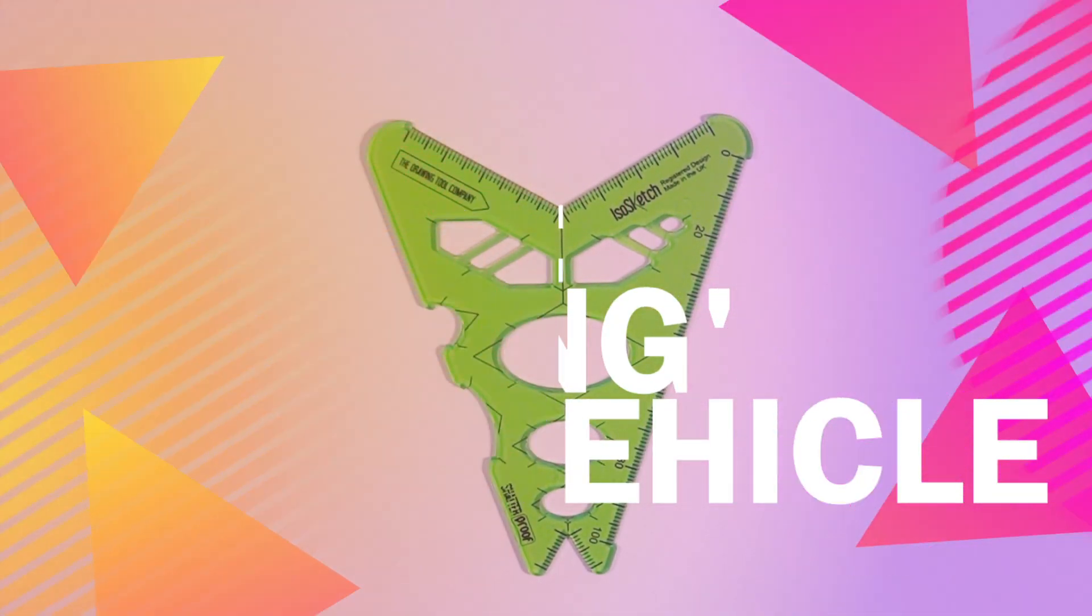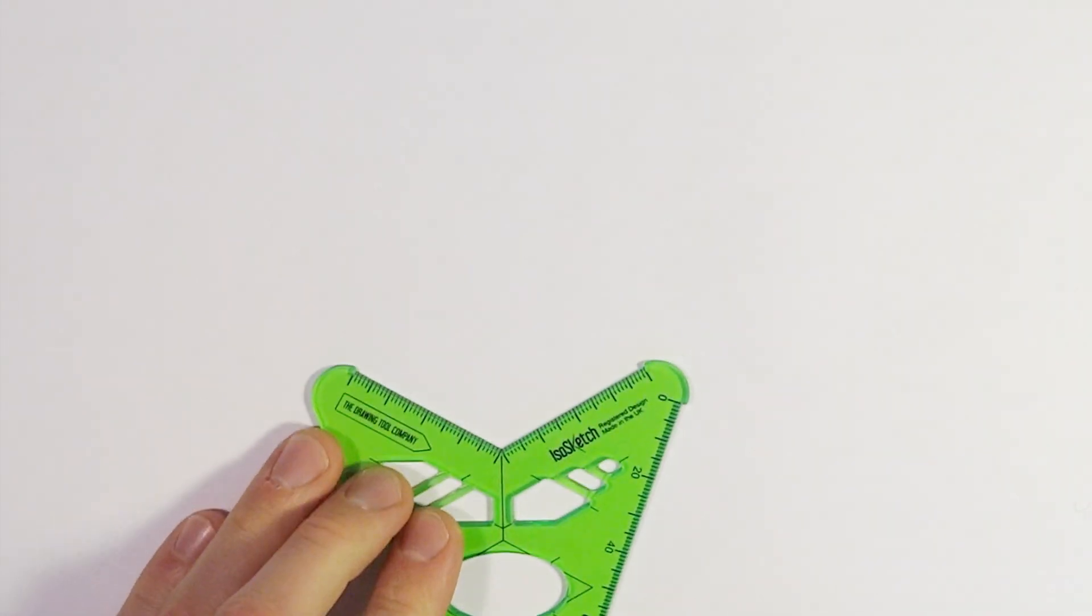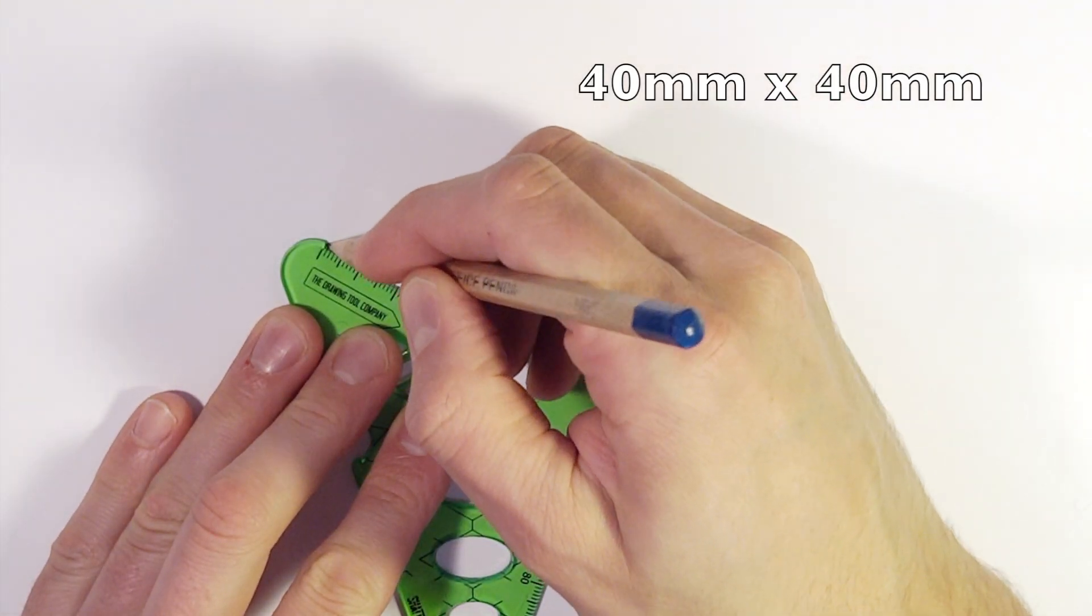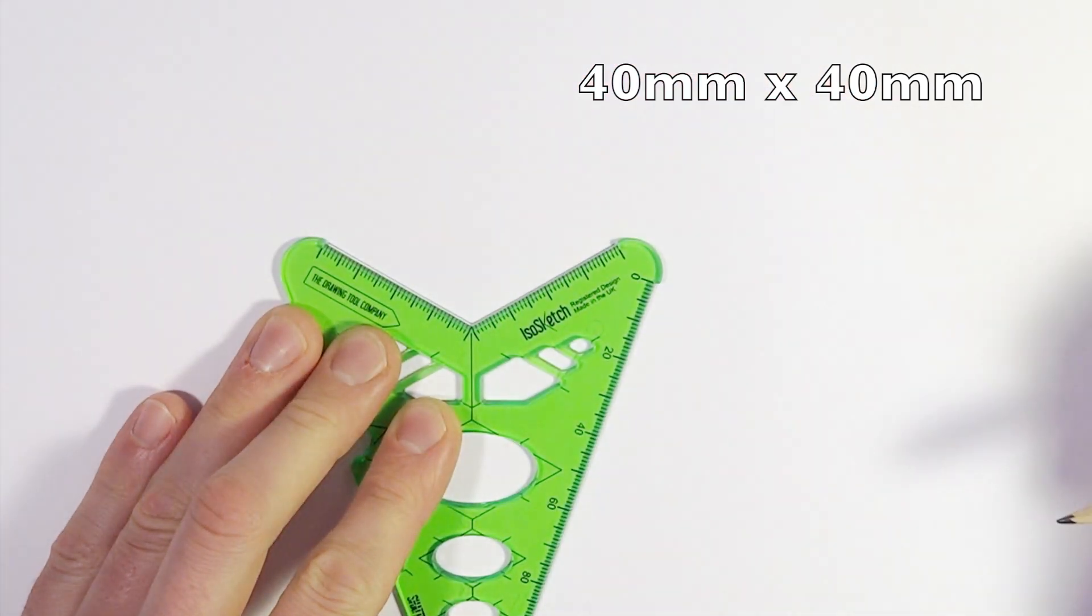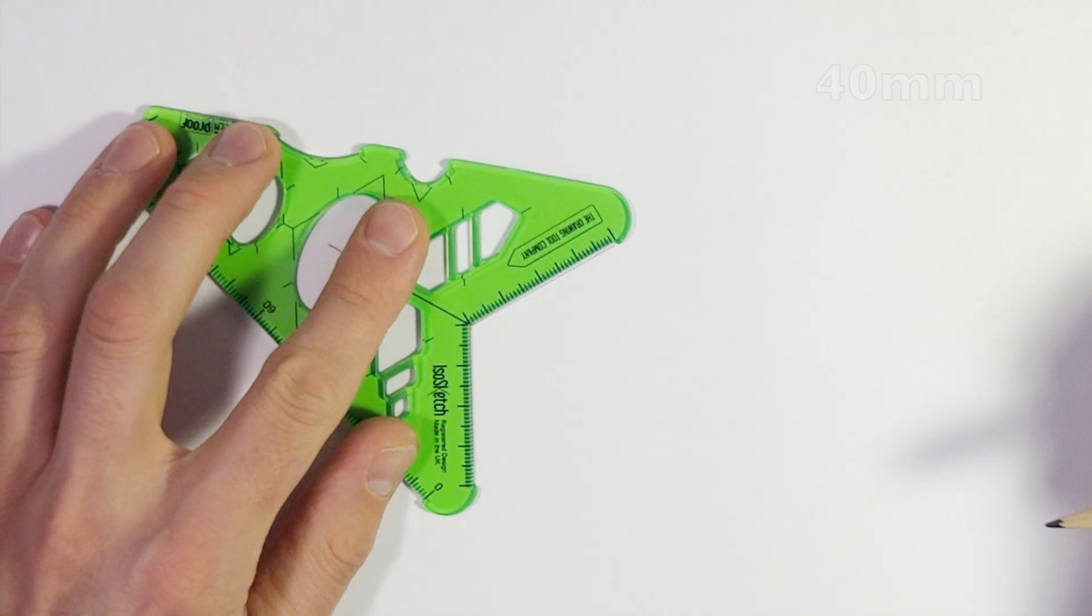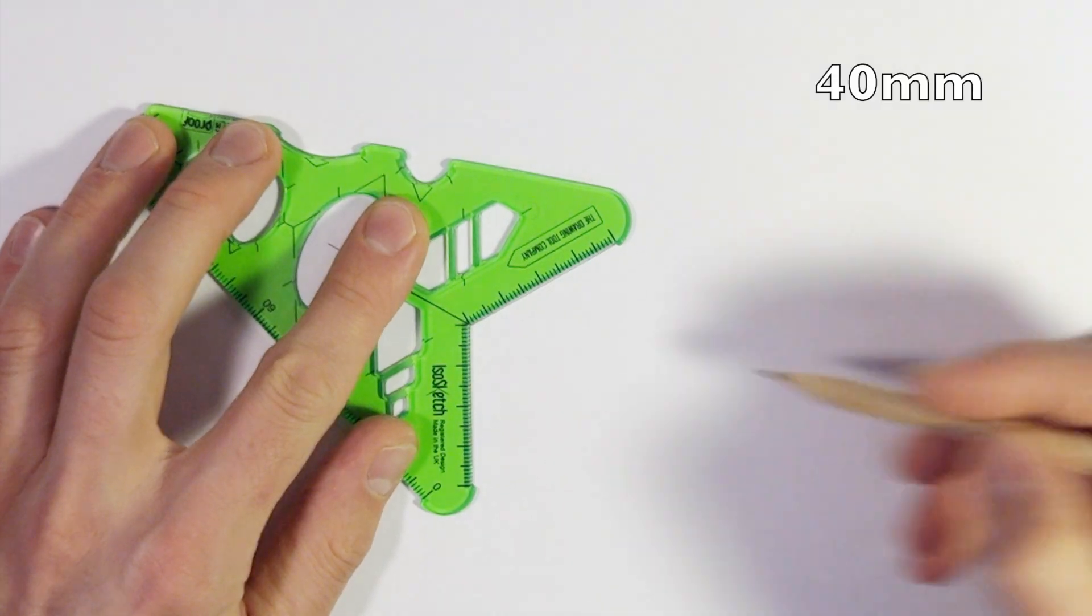Welcome designers to this 4x4inSchools sketch tutorial. Here we're going to show you how to create the basic starting point for any 4x4inSchools vehicle using the ISO sketch tool, drawing some 40mm or 4cm lines to get us started.